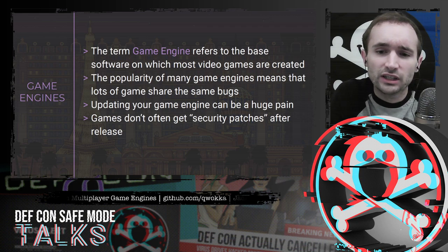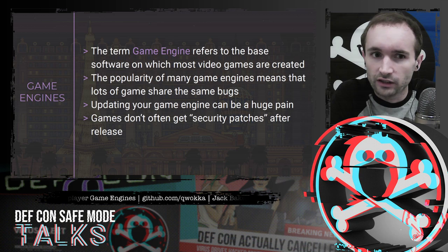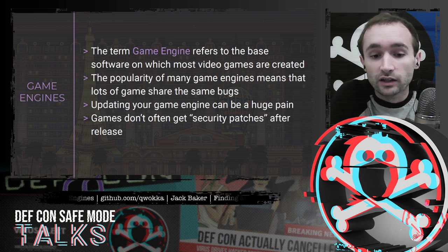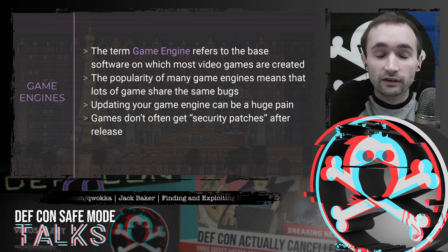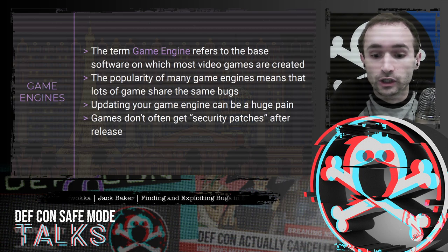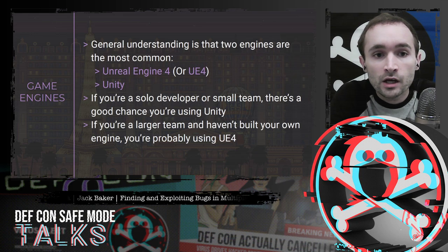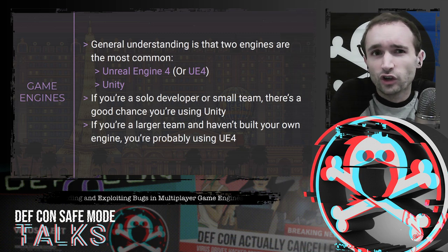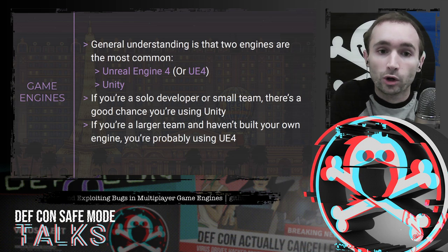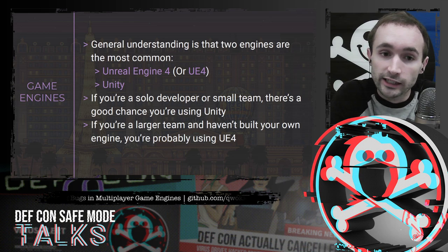The popularity of many game engines means that a lot of games share the exact same bugs. This is made worse by the fact that updating your game engine can be a huge pain, and games don't usually get security patches after release. An independent release is not going to get patches a year or two after release just to fix some security bug. There aren't a whole lot of good statistics on what game engines are the most popular, but two of them are more common than others: Unreal Engine 4 and Unity.